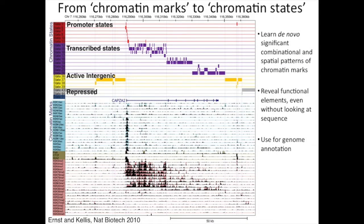What we're interested in doing with ChromeHMM is taking potentially many different maps of genome-wide signal and converting that into chromatin state annotations that leverage the combinatorial nature of the data and the spatial information to give a single annotation to each location in the genome. These annotations could correspond to candidate enhancer regions, transcribed regions, or promoters and gene starts.